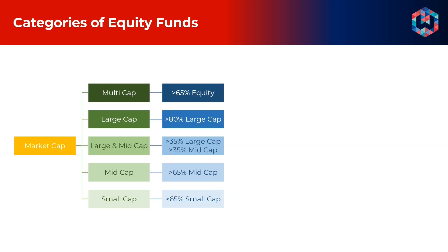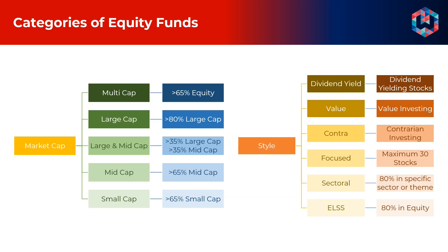Equity funds could also be classified based on the style of investing. A dividend yield fund would focus on investing predominantly in stocks that have a high dividend yield, whereas a value fund follows the philosophy of value investing, looking at sectors that are undervalued. A contra fund looks at contrarian opportunities. A focused fund has a maximum of 30 stocks in its portfolio. Sectoral funds look at a particular sector such as pharma or technology. An ELSS or equity linked savings scheme is a tax saving mutual fund whose mandate is to invest at least 80% in equity.